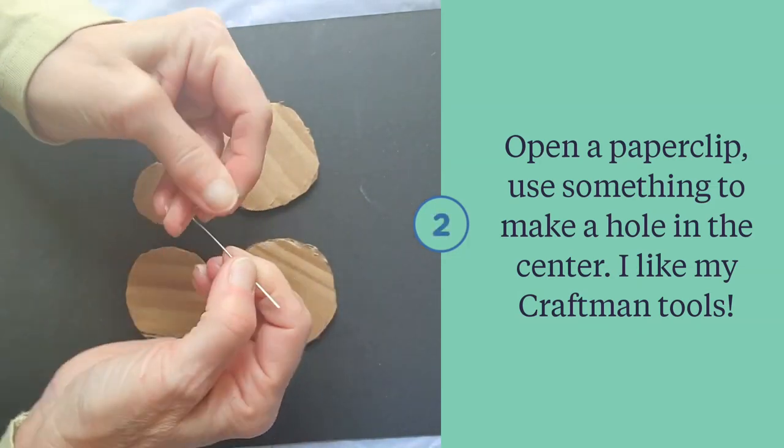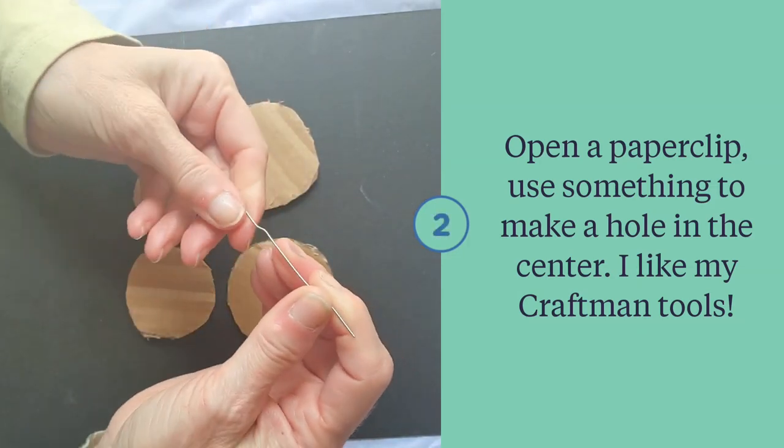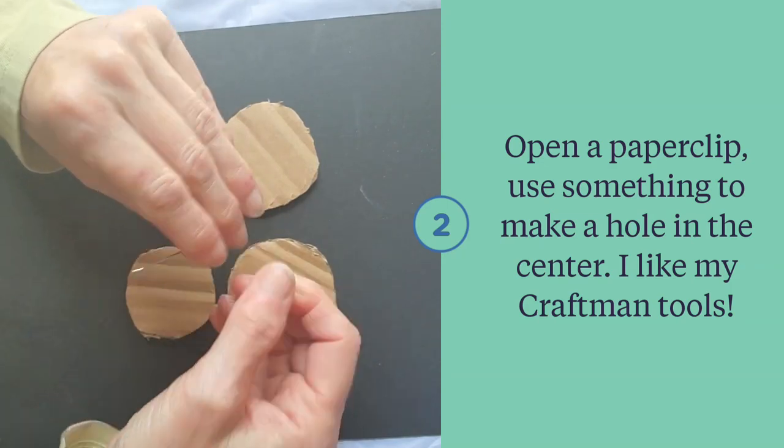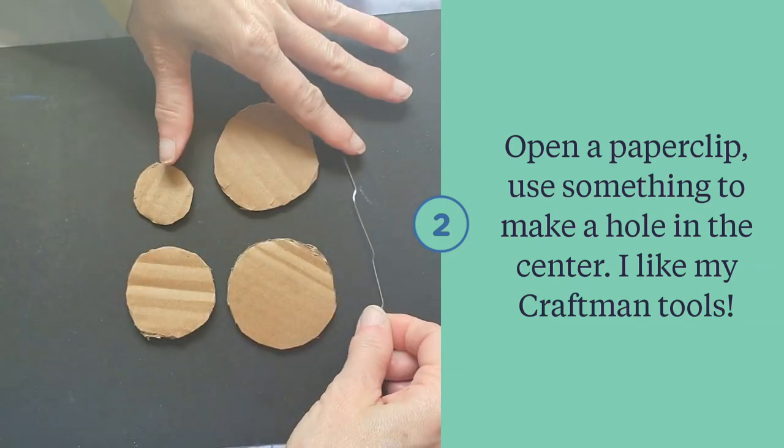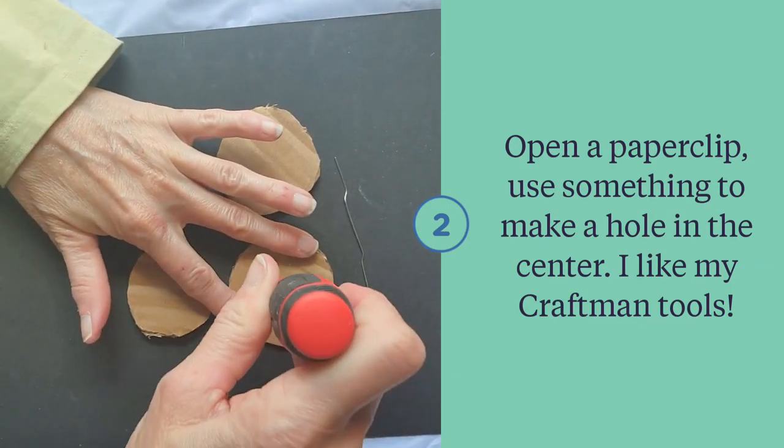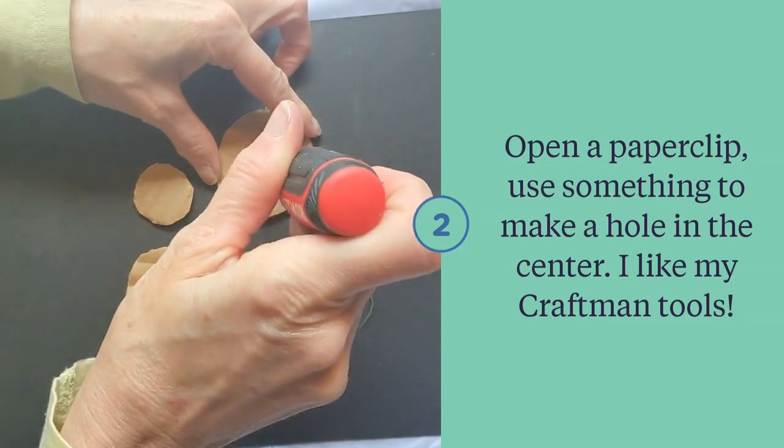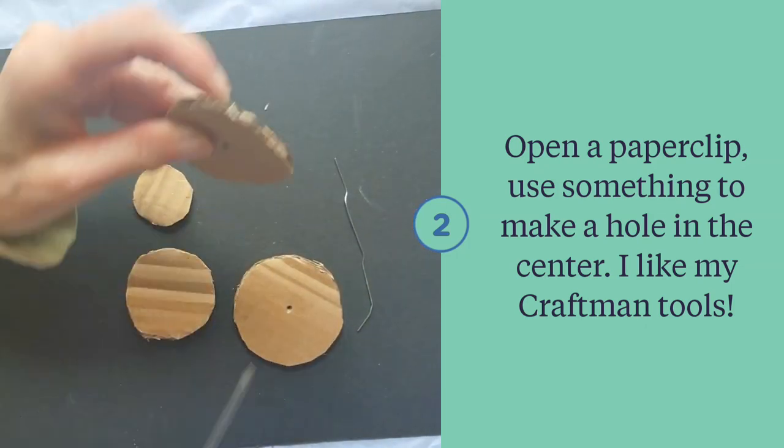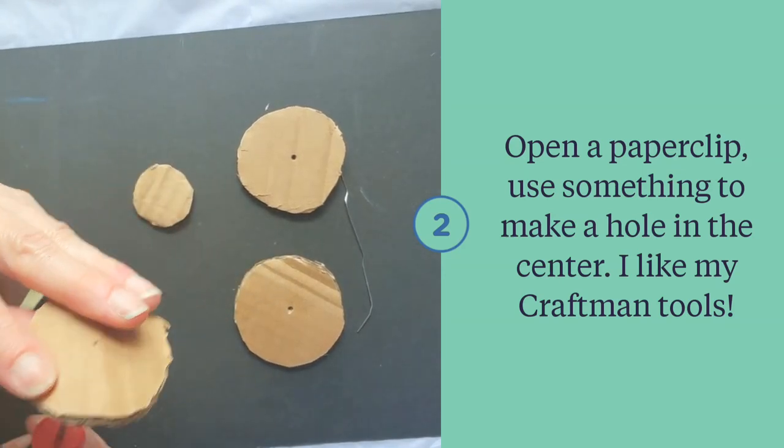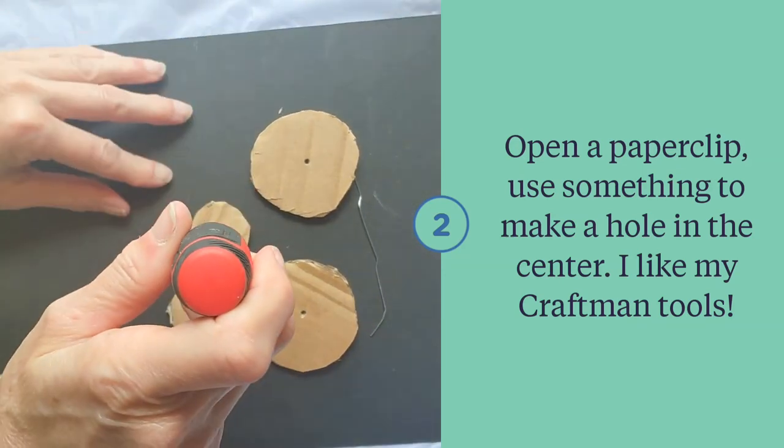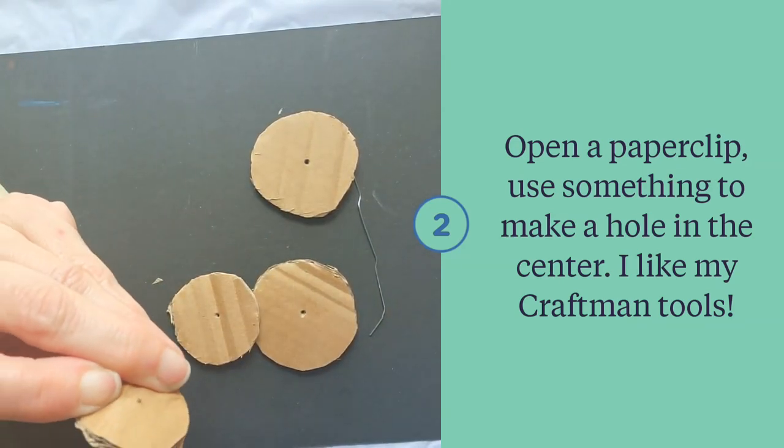Open a paper clip, or you can use another wire that you have. Then we are going to place holes in the center of each one of these circles. I love this crafty little tool here, it's a Craftsman.